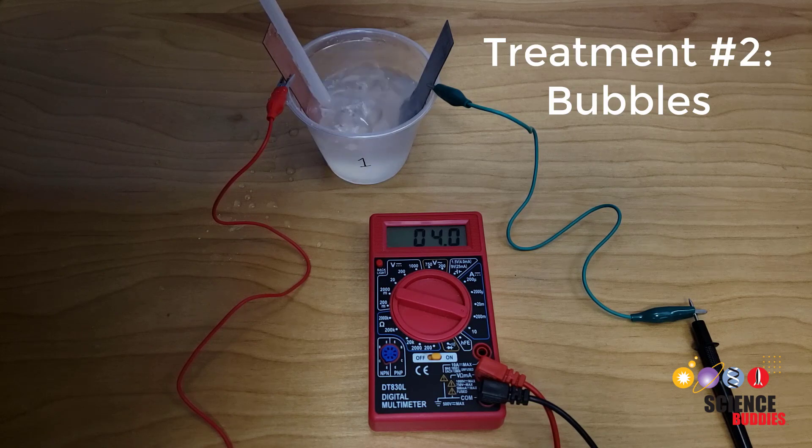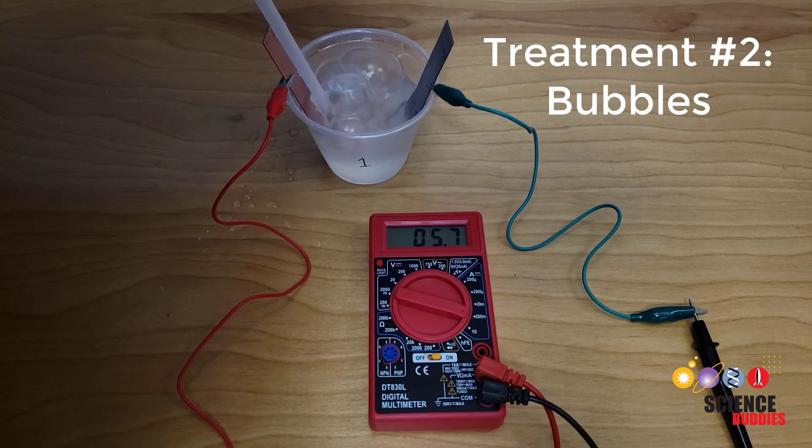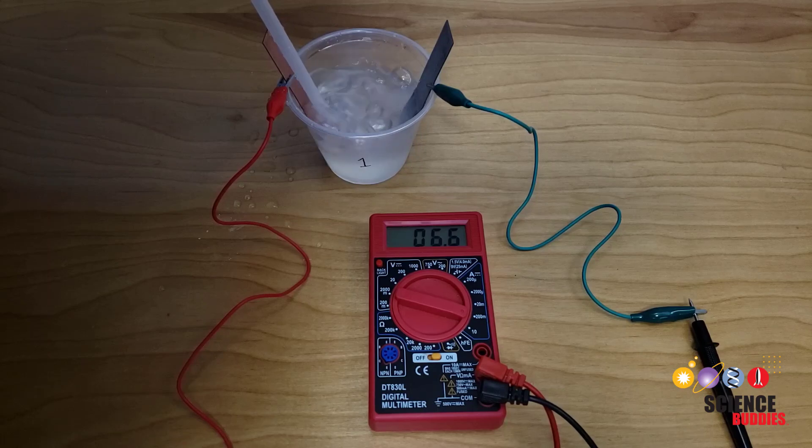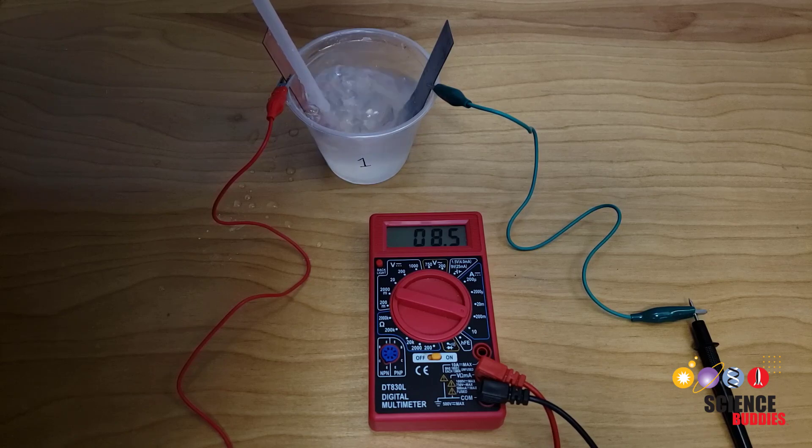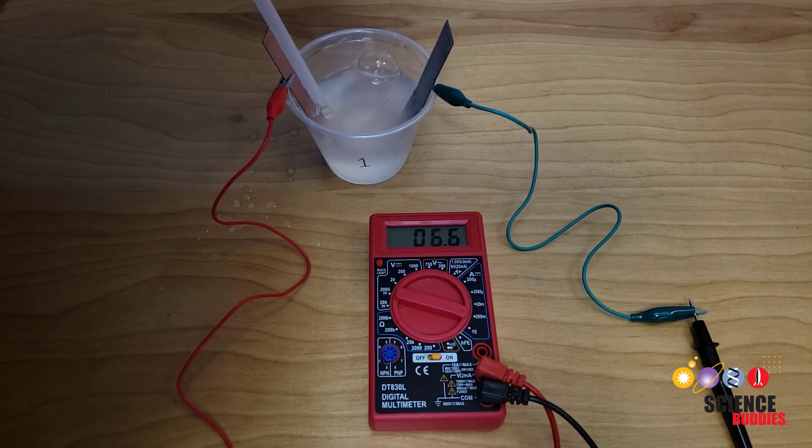Take a straw and blow bubbles near the copper electrode. Again, do this for three minutes, record the highest current reading that you see, then switch back to DC voltage, measure the voltage, then switch back to current, and wait another five minutes before continuing with the next step.